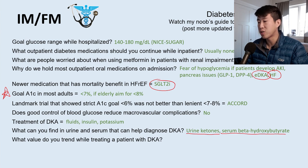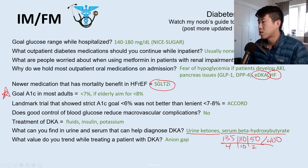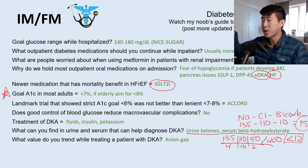While treating DKA, we trend the basic metabolic panel looking at the anion gap and waiting for it to close. Anion gap = sodium minus chloride minus bicarbonate. For example, sodium 135, chloride 110, bicarb 10 gives an anion gap of 15 — elevated (normal is less than 12). We continue insulin and fluids until the anion gap closes to less than 12.